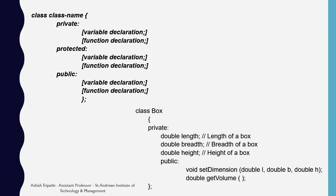Here is the syntax for the class. It uses the keyword class followed by the class name, then a block having private, protected and public sections. Each section has its own variable and function declarations. Note that when the block ends there is a semicolon — don't forget to put the semicolon. Here is an example of the class Box. It has private members: length, breadth and height, all of double data type. In the public section we have two functions: setDimension for setting the values of length, breadth and height, and getVolume for getting the volume of the box.